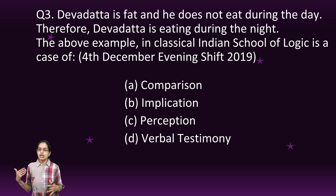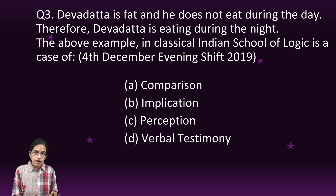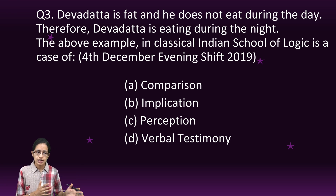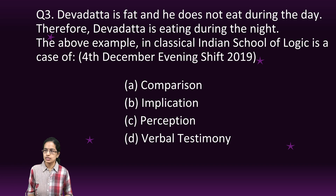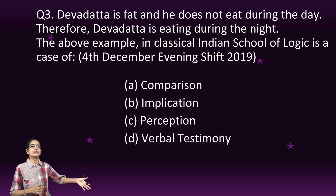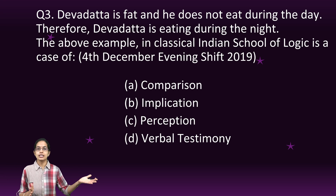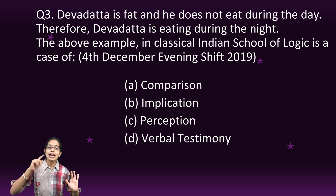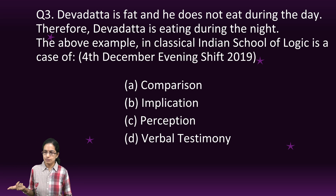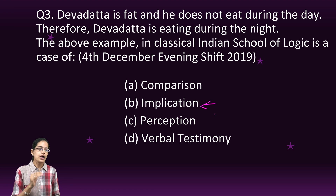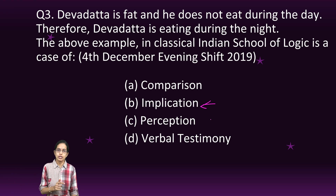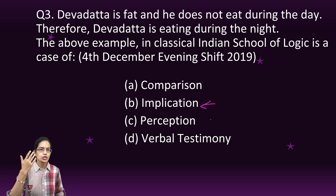The next is a simple question on Arthapatti, which we have discussed in our class on Pramana. When we talked about the six Pramanas, Arthapatti is one where we are trying to make an implication. So when I say Devdata is fat and he is not eating during the day, that means he is eating sometime during the night — that is just an implication derived. Arthapatti is also known as implication, conjecture, and circumstantial knowledge.